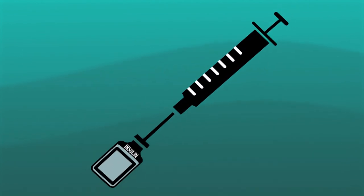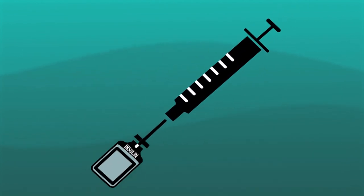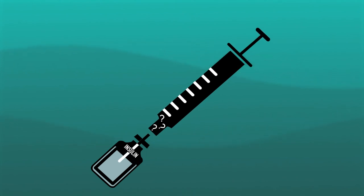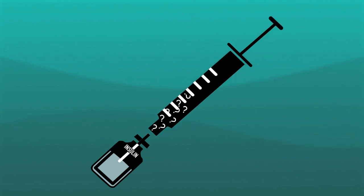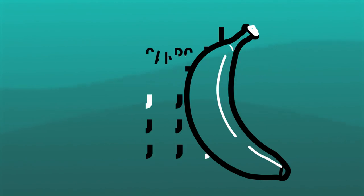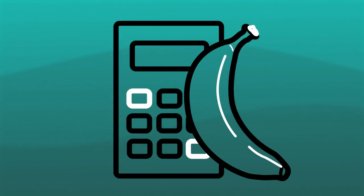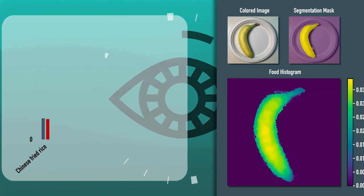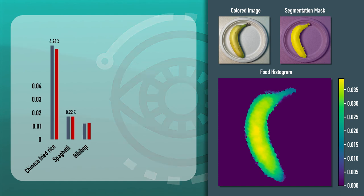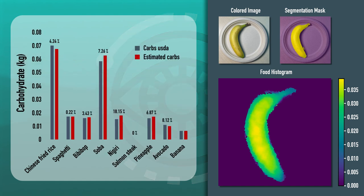To simplify insulin dosing for patients with diabetes, we developed all-in-one pen systems that are capable of calculating carbohydrate loads of food through computer vision, as well as measuring glucose levels and then integrating this data to inform accurate dosing of insulin.